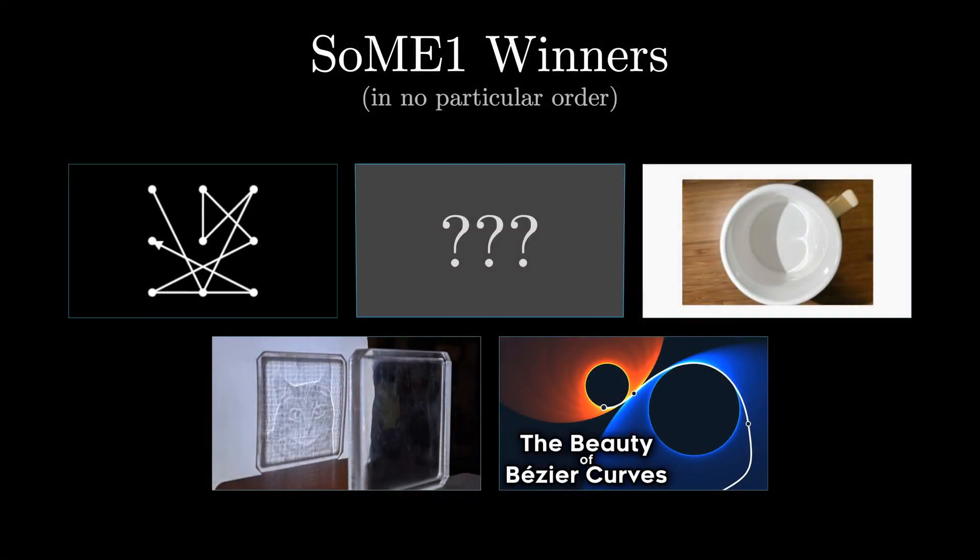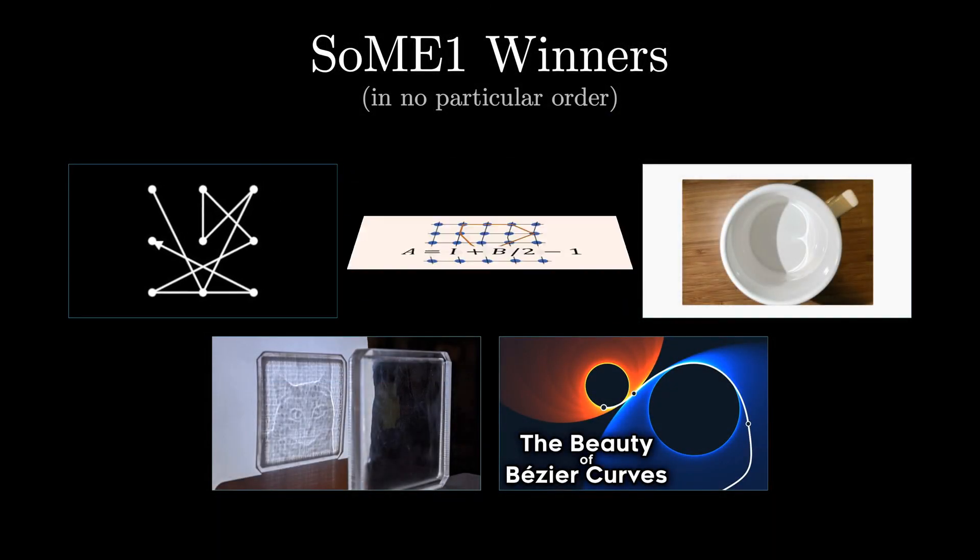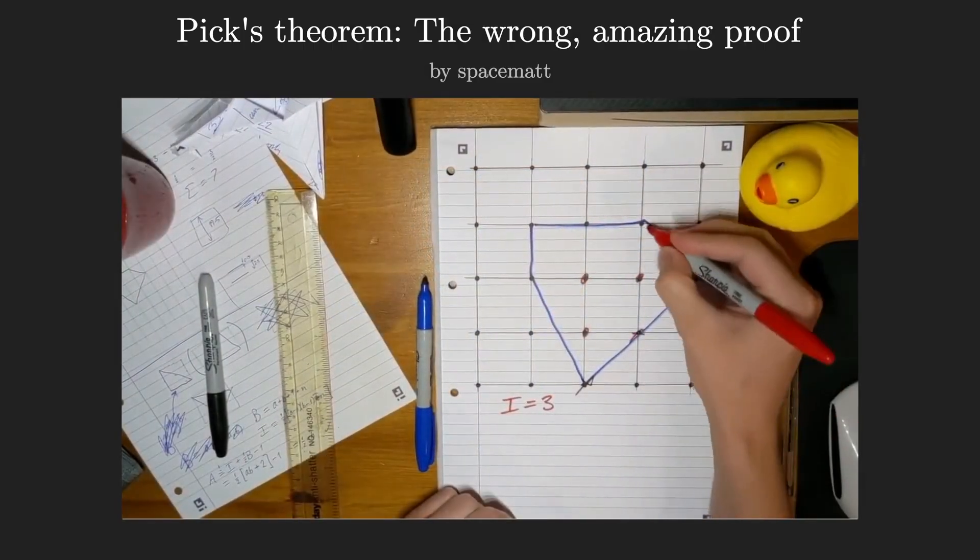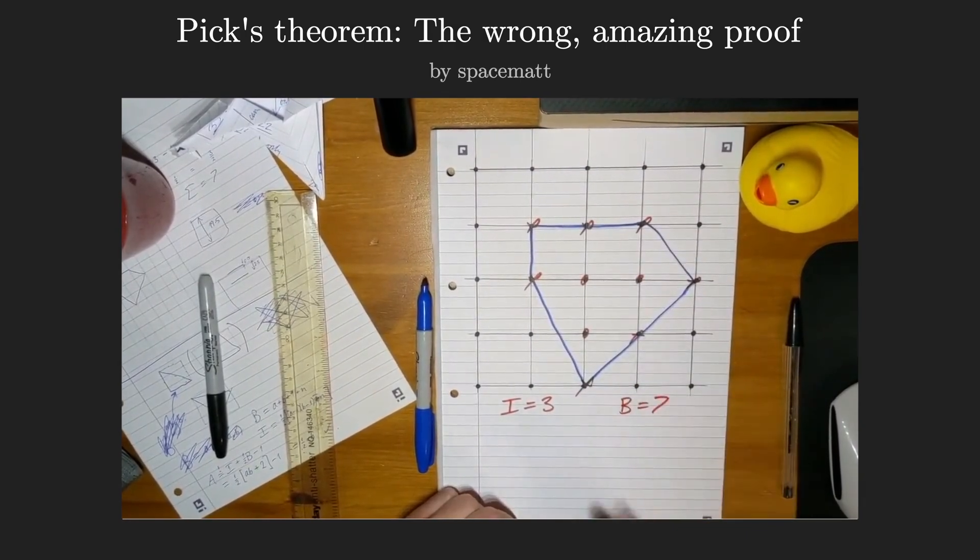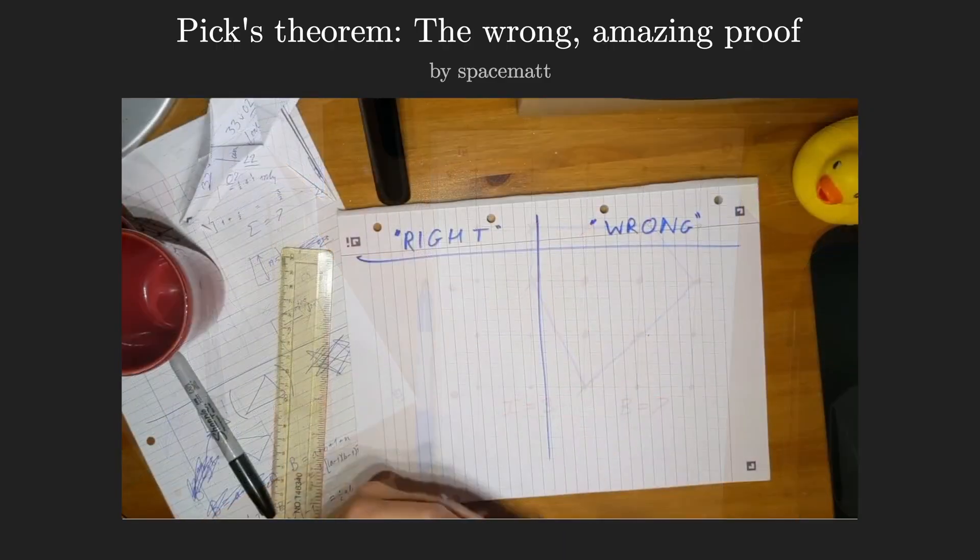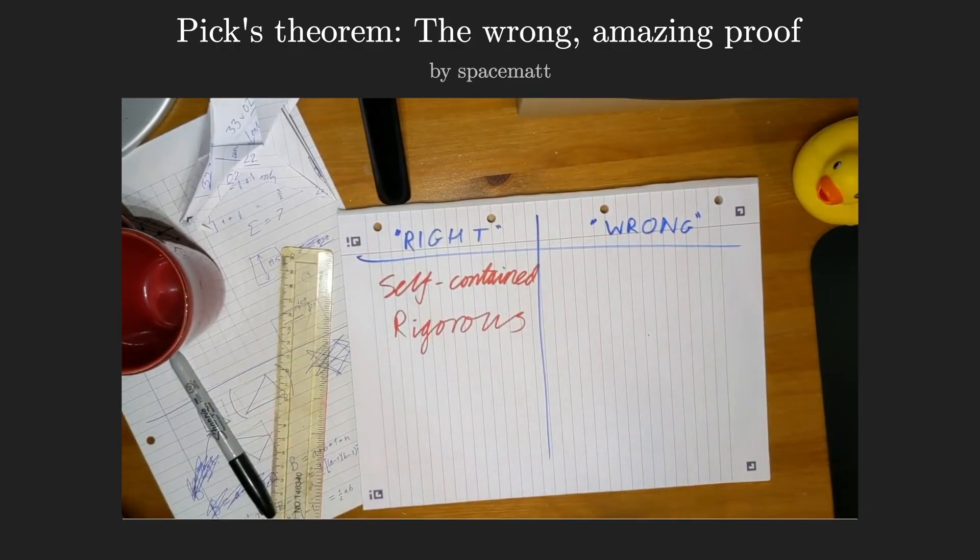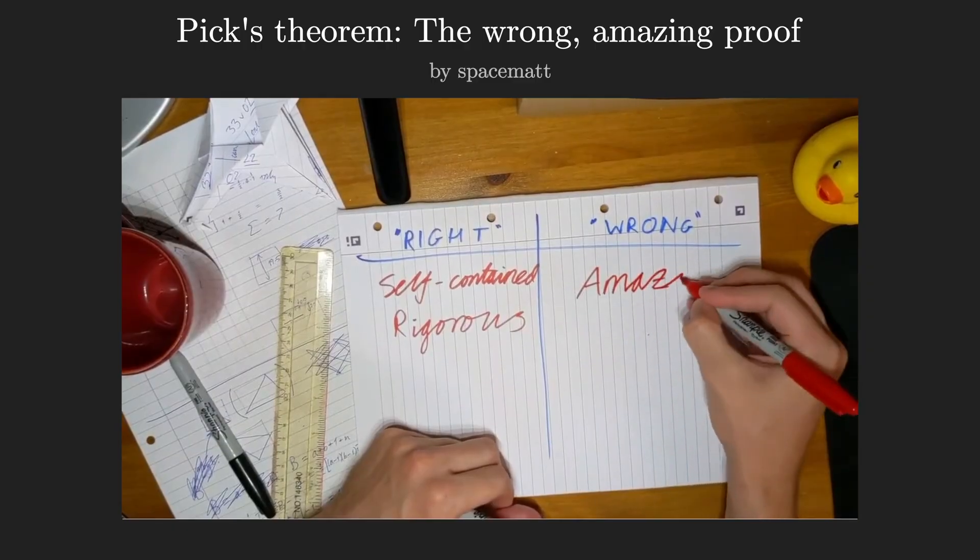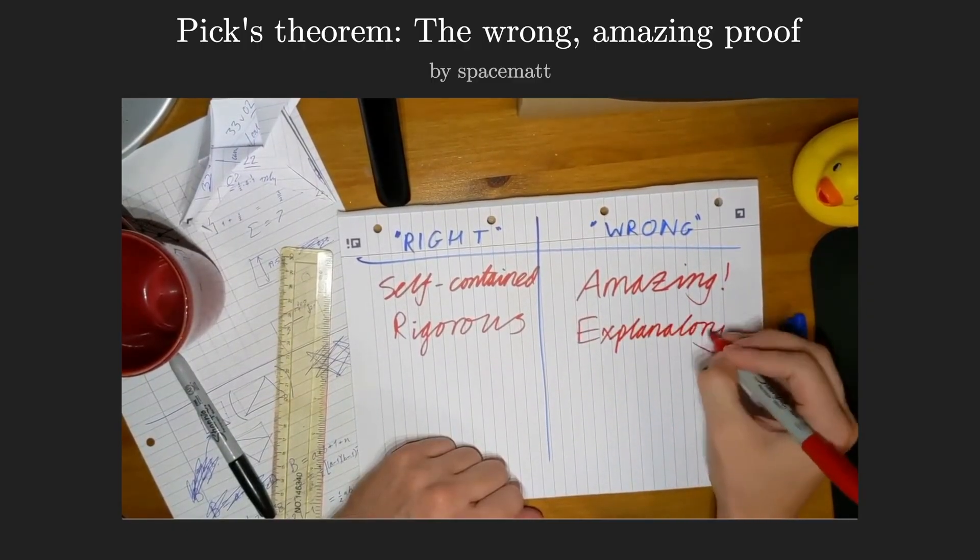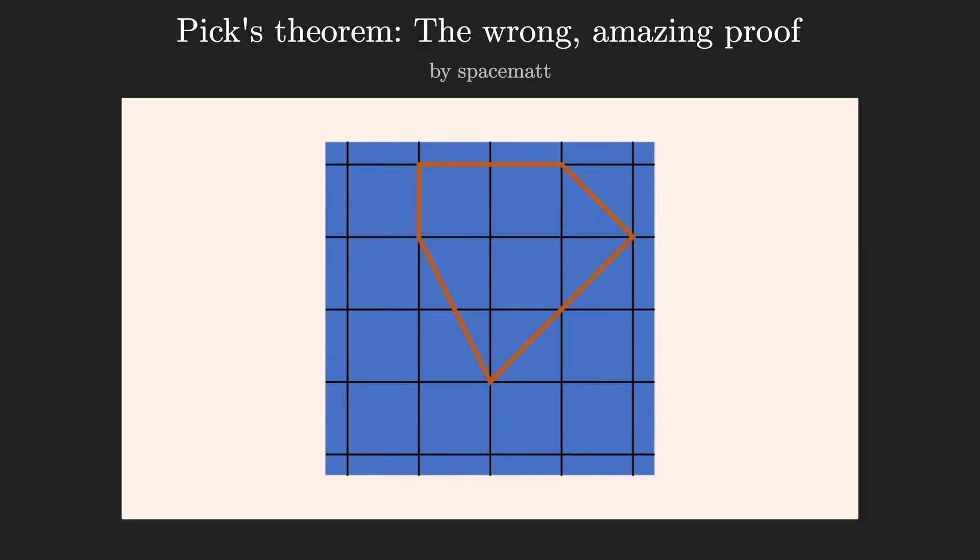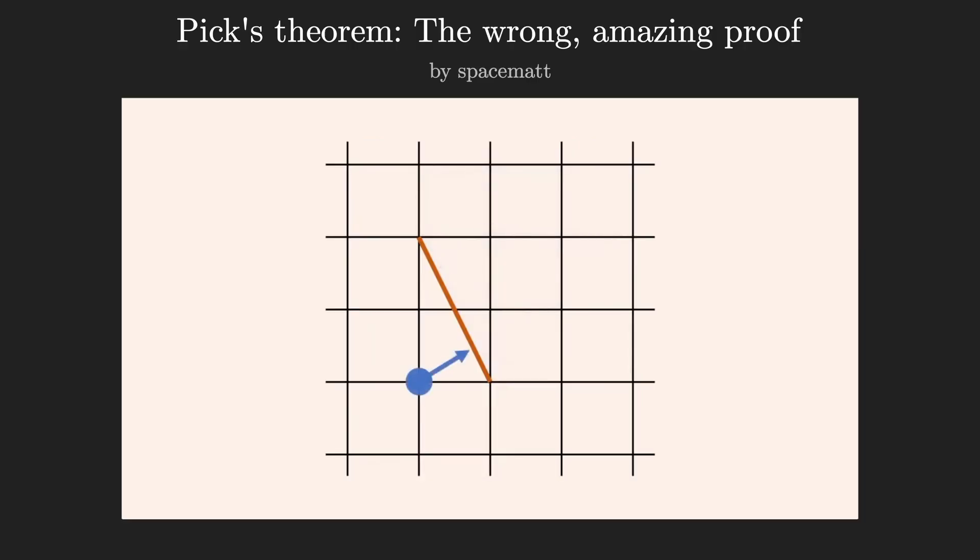The final pick I have on my list, which again is in no particular order, is one that multiple different guest judges singled out as being especially good, and also easily underappreciated. The video describes a really clever and memorable proof of this cute fact from geometry known as Pick's theorem. The author has some really nice thoughts about the role of different kinds of proofs in math, thoughts which more students, and more teachers, would really benefit from hearing.